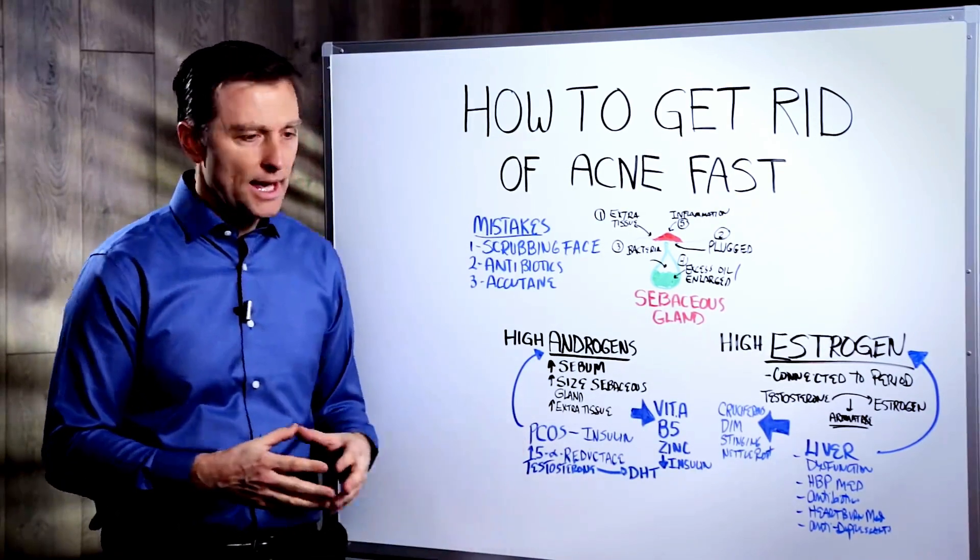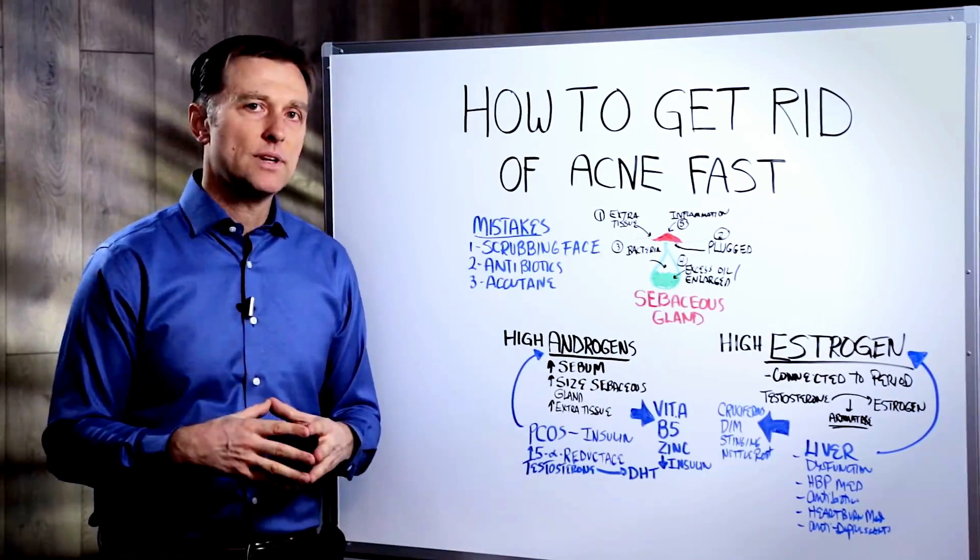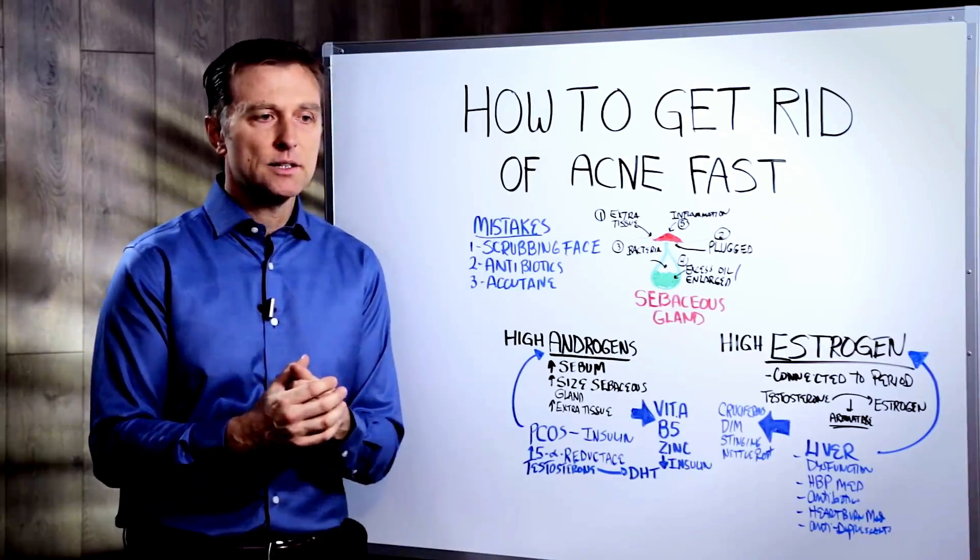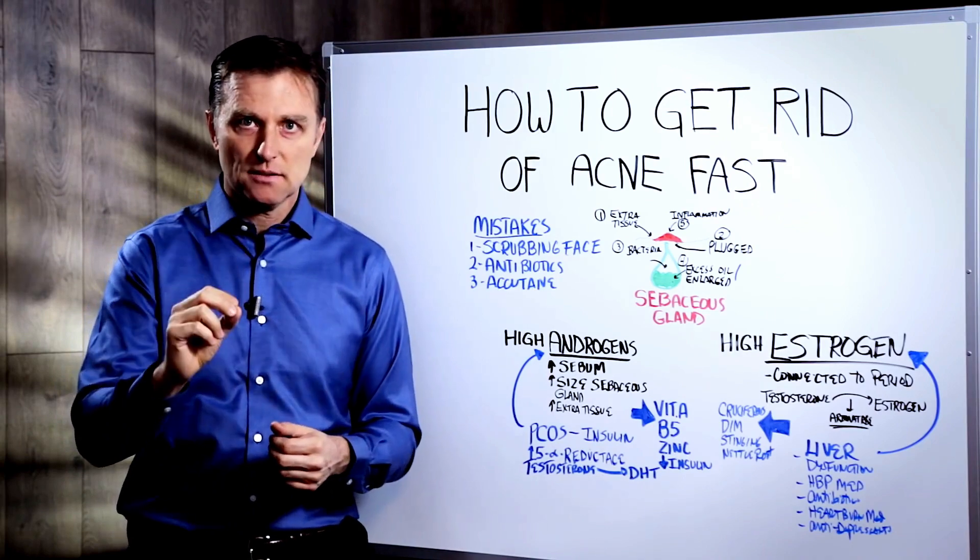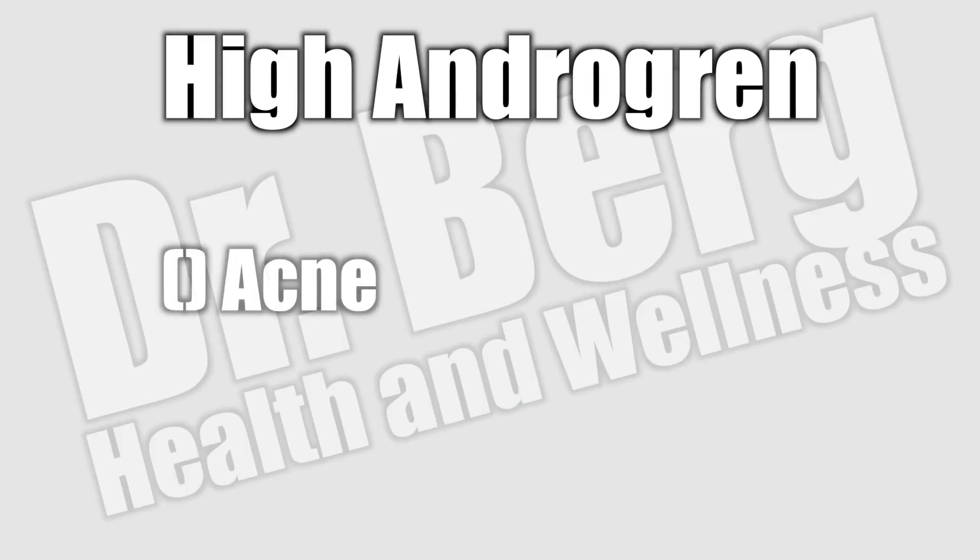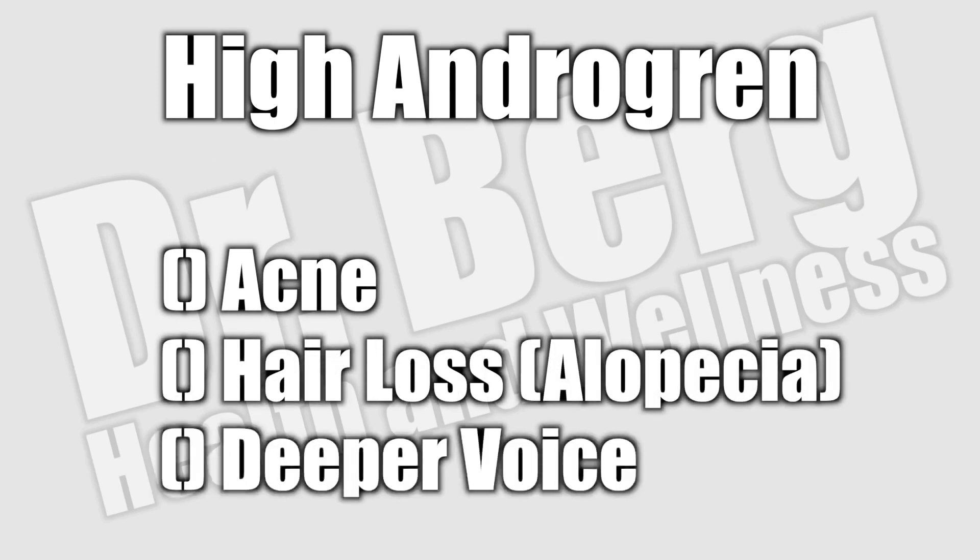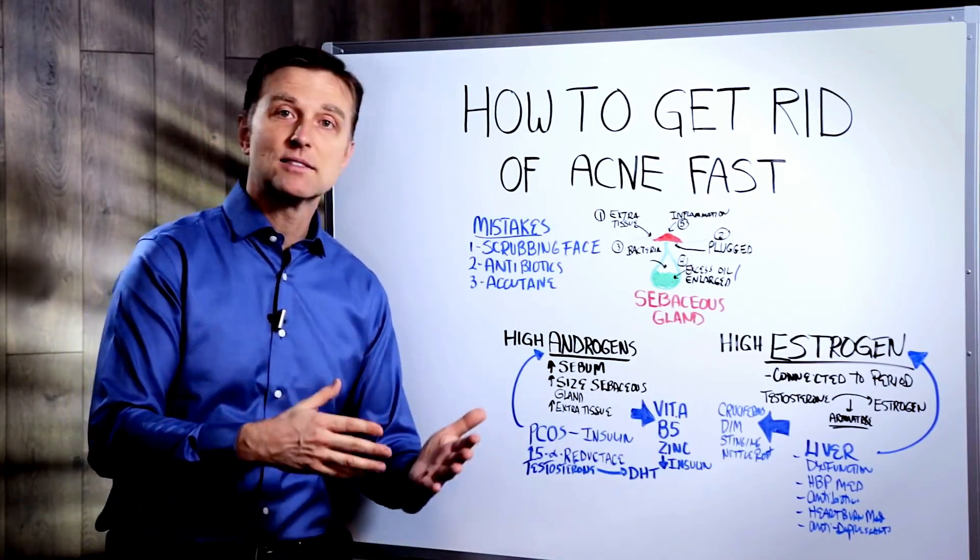Number one, you may have a condition called PCOS, polycystic ovarian syndrome. I put a link down below if you've never heard about it before, but that's basically a situation where you're female and your ovaries are pumping out too much androgen. And the three big symptoms are acne, hair loss, or alopecia, or facial hair. Deeper voice as well. So those are the symptoms. But while we're on this topic, let's just talk about what causes PCOS.